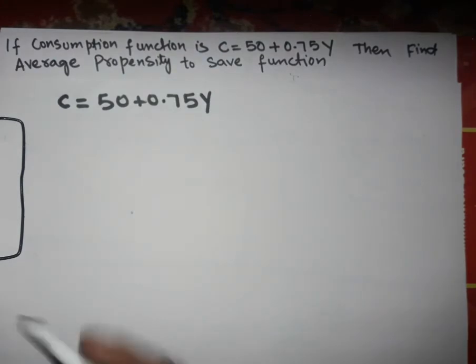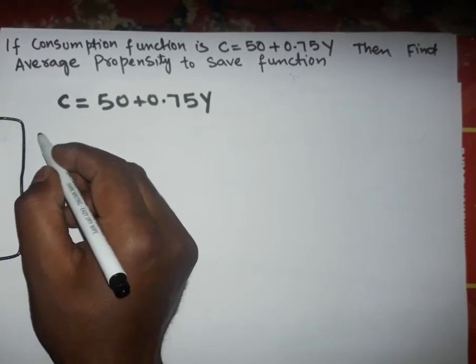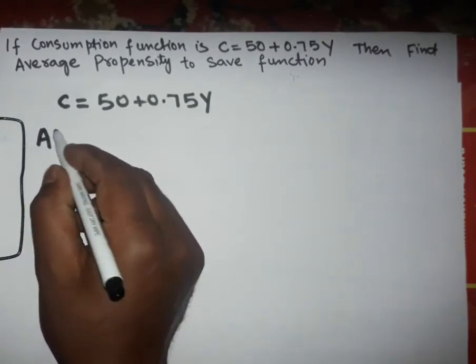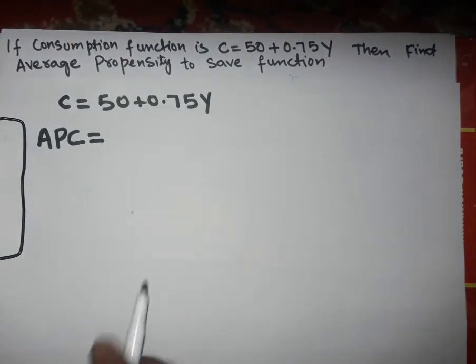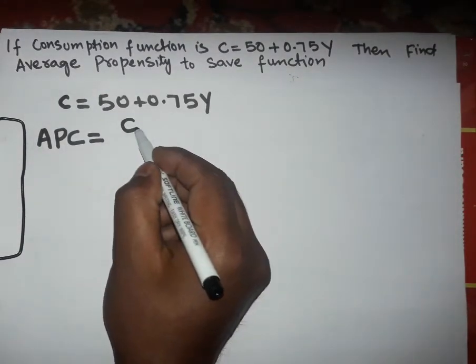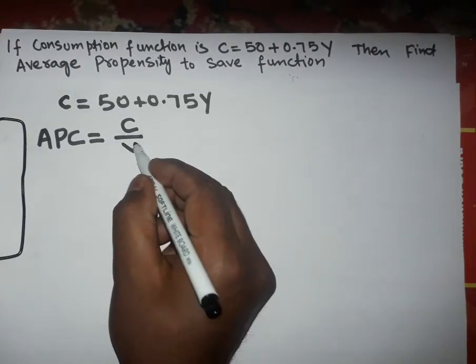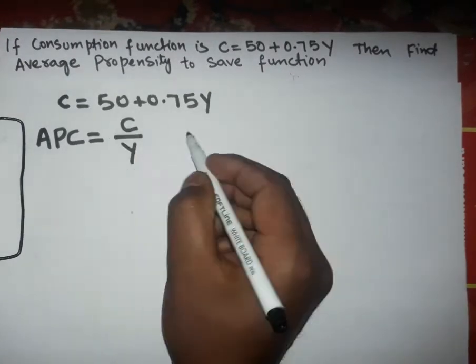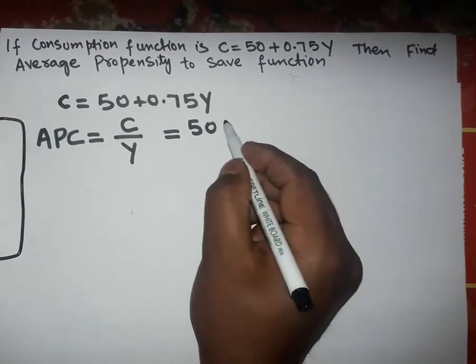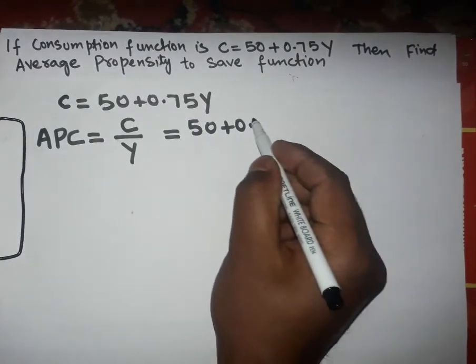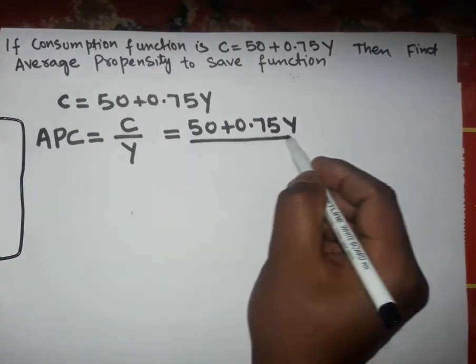First of all, we will find the average propensity to consume, that is APC. Now, average propensity to consume equals consumption over income. Our consumption function is 50 plus 0.75Y divided by Y.